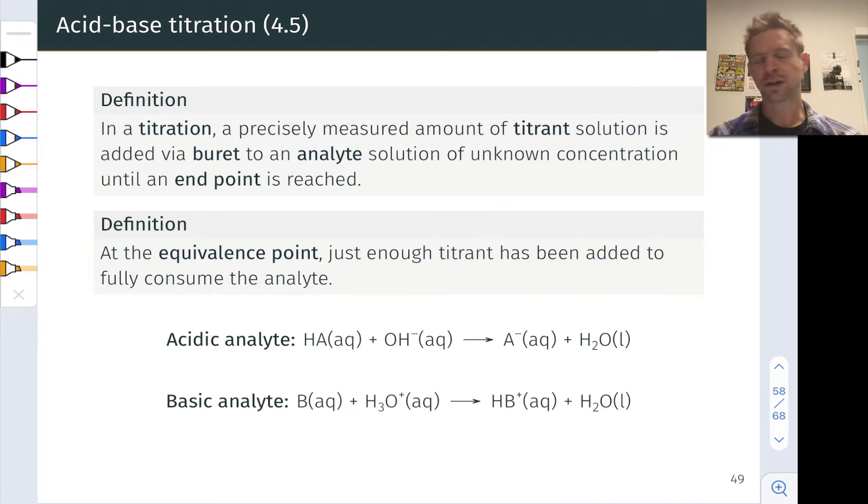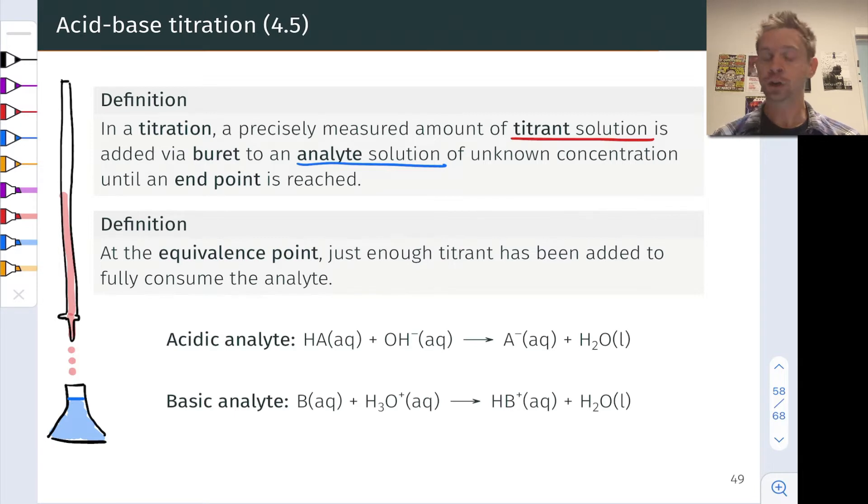Let's start by rolling the clock back to chapter 4 and defining what we mean by an acid-base titration. In any titration, a precisely measured amount of a solution called a titrant is added using a piece of glassware called a burette to an unknown solution called the analyte. So we have the analyte typically in an Erlenmeyer flask, in this little drawing it's blue, and the titrant here is red and it's added via a burette to the analyte in a controlled manner.